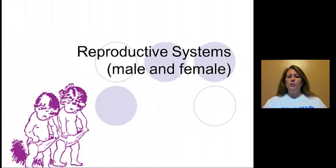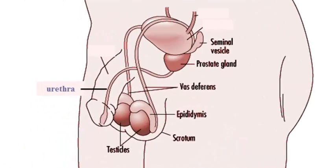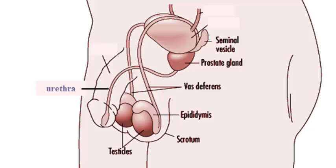Welcome. For this particular lecture we're going to be talking about the reproductive systems of both the male and the female. We're going to start with male, and you will have on the exam diagrams where you'll need to label both the male and the female. You can pause the video, reference a textbook, or look online. You do not have to have this in your spiral, and no quiz questions will come from labeling.